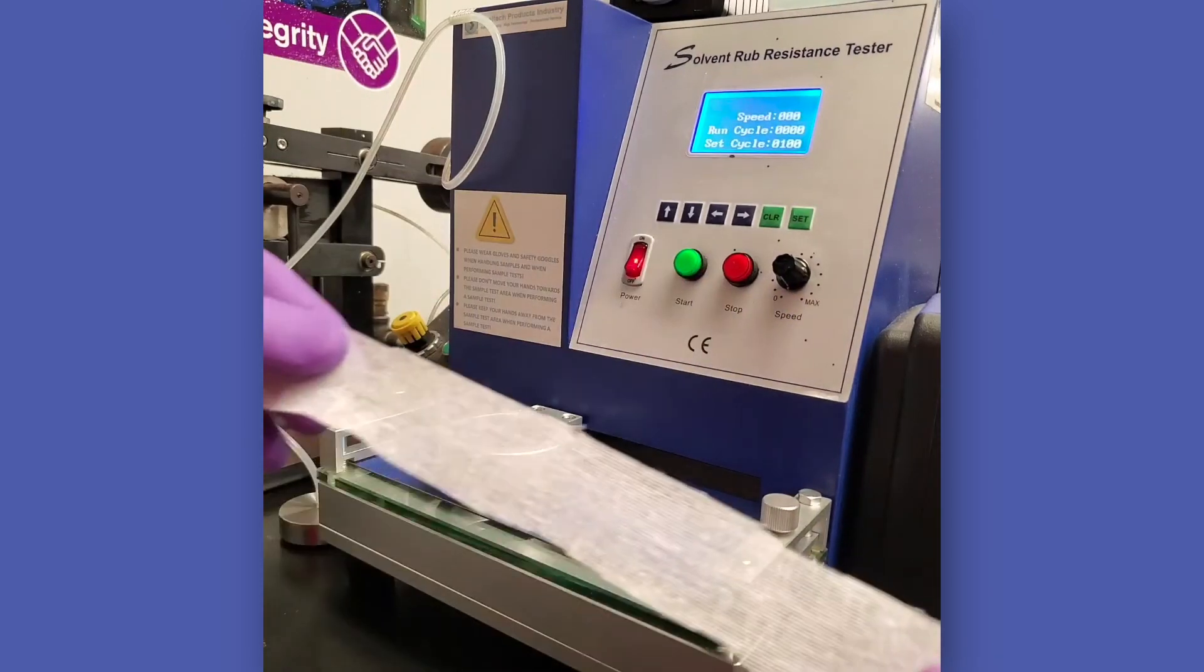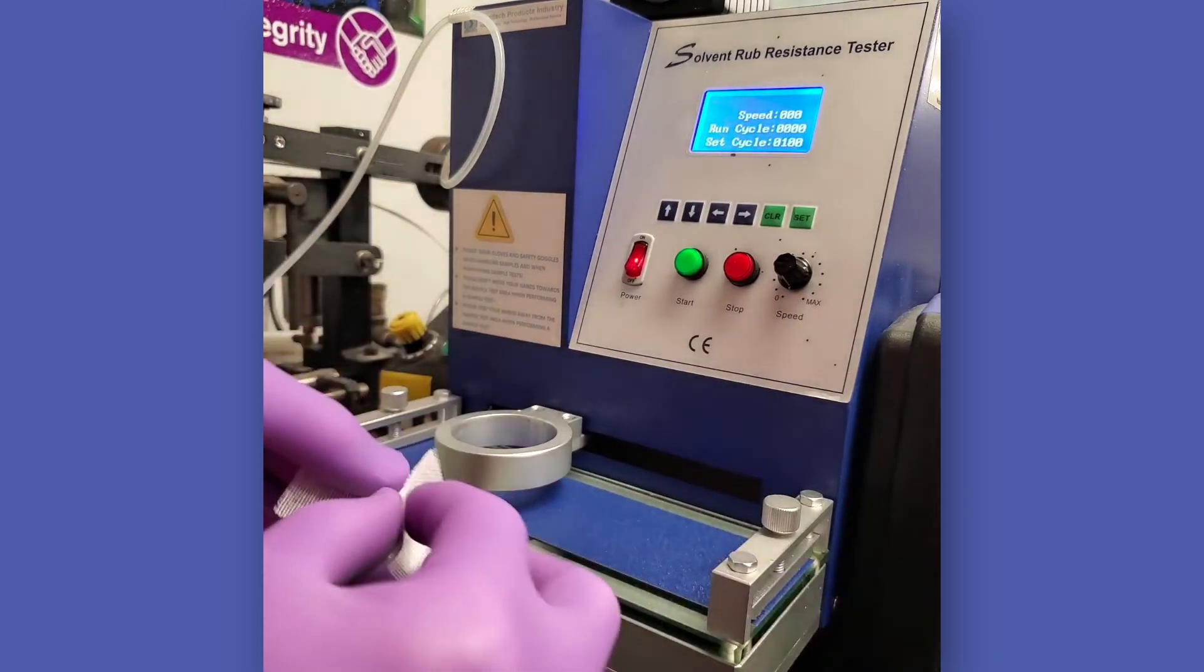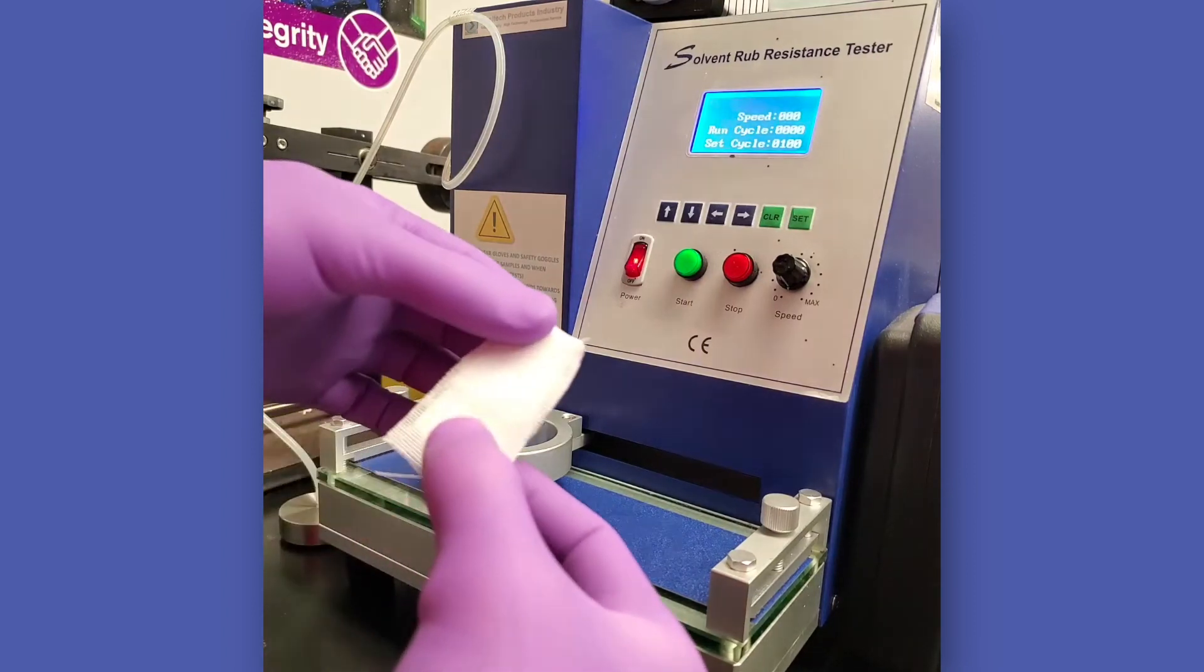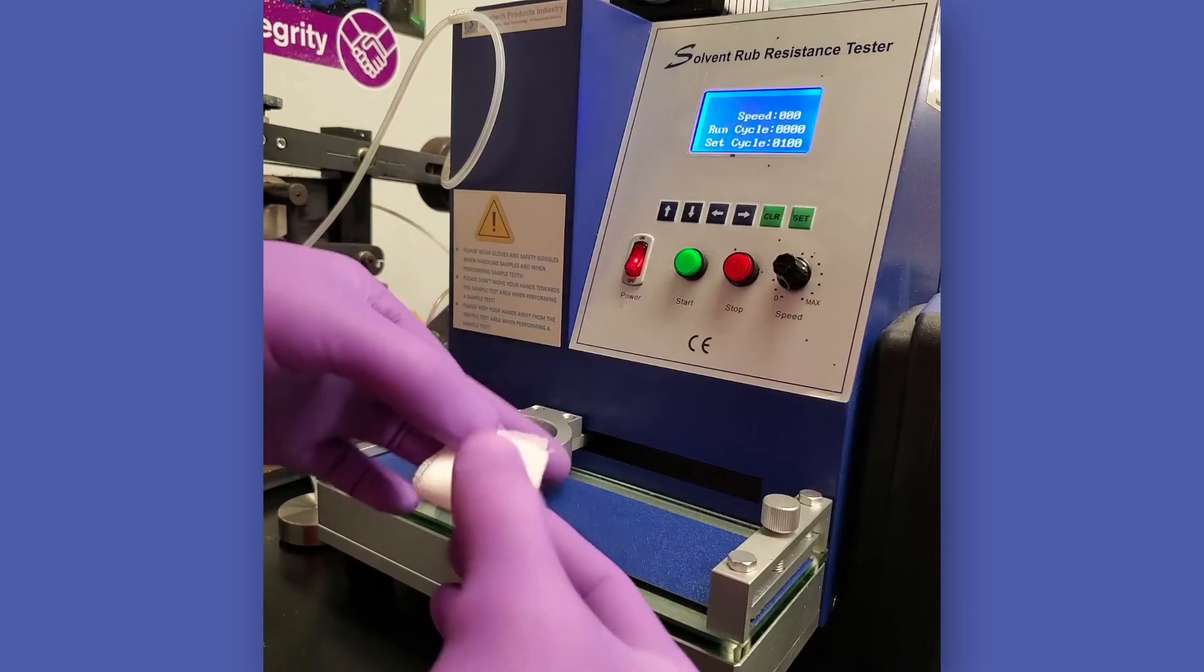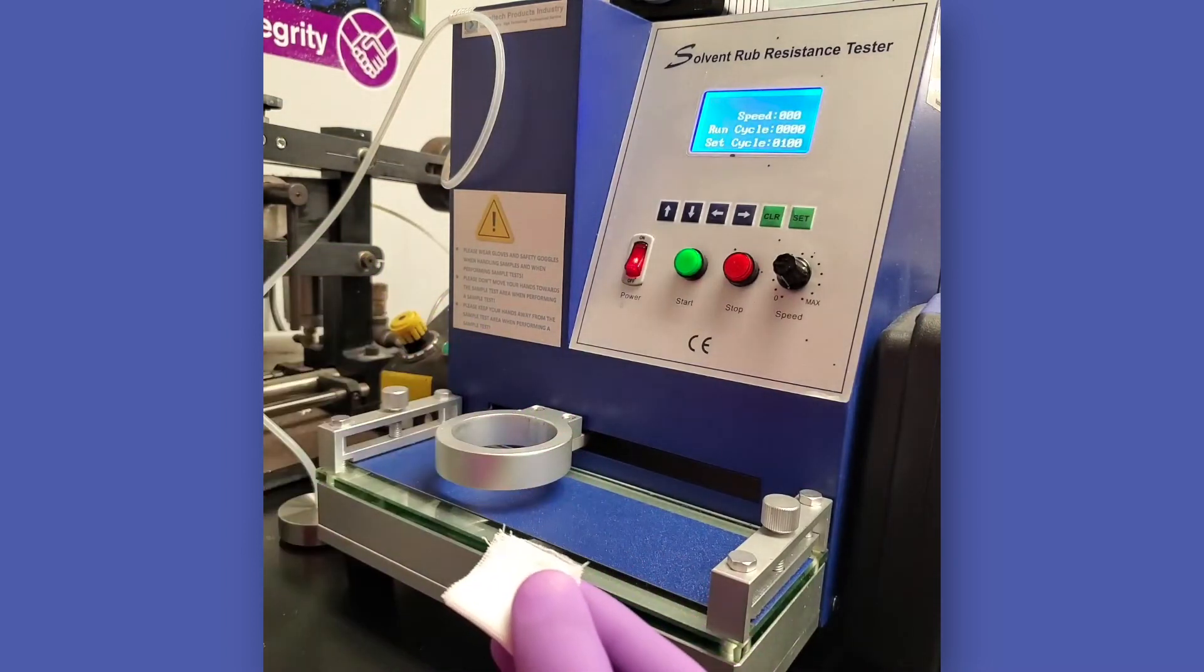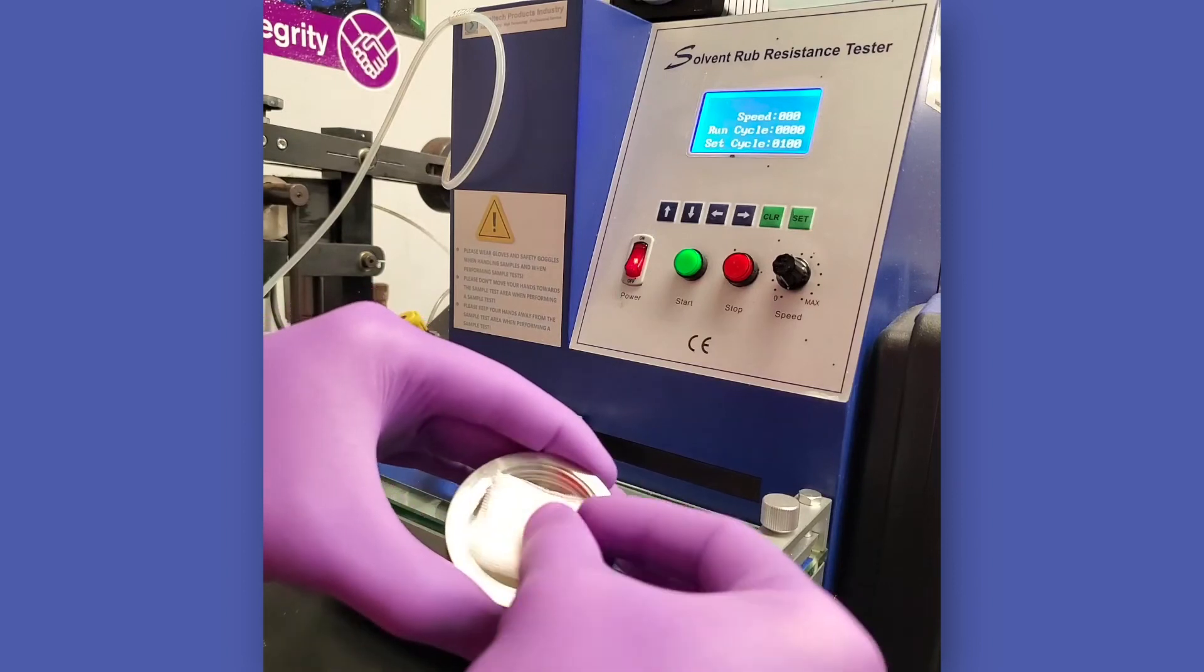Select the agreed upon solvent for the test and be sure that the solvent reservoir is filled as recommended by the rub machine equipment manufacturer and that the pump setting is correct. If not, too much or not enough solvent may be delivered to the testing pad, which may lead to false results.